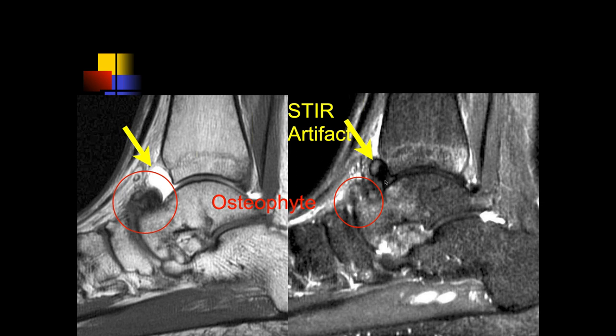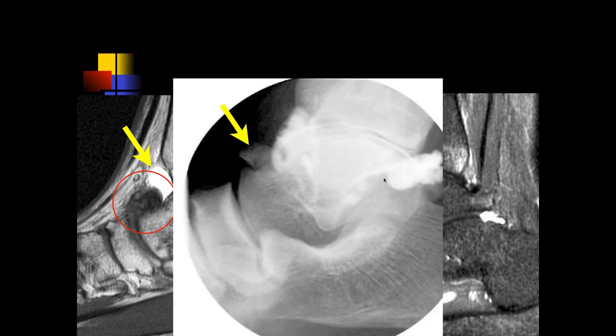STIR is a dangerous sequence when you put in contrast, because the signal suppression is based on the T1 time of the tissue, not whether it has fat in it — the T1 of contrast is often similar to that of fat, so the contrast will be suppressed. There's a lot of degenerative disease here — osteophytes at various joints. It almost looks like just a prominent osteophyte along the talus.